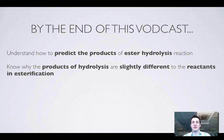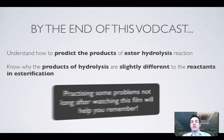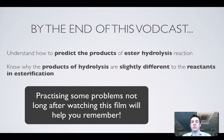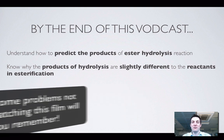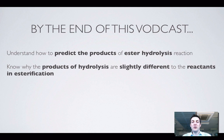That was a pretty short film. Hopefully now you feel as though you can predict the products of a hydrolysis reaction involving an ester, you'll know what's used to hydrolyze an ester, and you understand why we make the salt of the carboxylic acid rather than the carboxylic acid that we would have used in esterification. If there's anything you'd like to ask, please feel free to post a comment or come and see me for help.